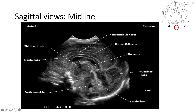This is the cavum septum pellucidum. You have the frontal lobe here, and this globe here is actually the thalamus. This is the occipital lobe, and the third ventricle is in the middle here. This is the cerebellum, and this is the fourth ventricle — you can see it here.